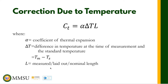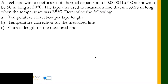We will illustrate this formula with the following example. A steel tape with a coefficient of thermal expansion of 0.0000116 per degree Celsius is known to be 50 meters long at 20 degrees Celsius. The tape was used to measure a line that is 533.28 meters long when the temperature was 35 degrees Celsius. Determine: (a) the temperature correction per tape length, (b) the temperature correction for the measured length, and (c) the correct length of the measured line.